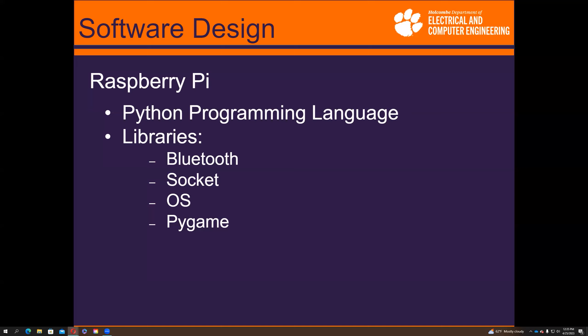PyGame is a library mainly used for making video games in Python, which means it has built-in classes for music. This allows us to play, pause, and manipulate the music in many ways. WAV files are used for the audio output due to needing lower computation power than MP3, which helps with audio distortion.